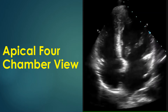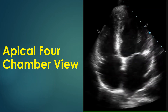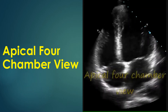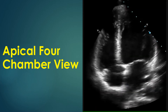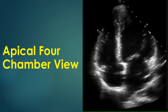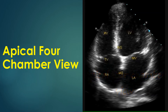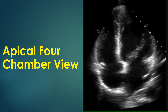The apical four-chamber view is obtained from the apex of the heart. It gives a good image of all four cardiac chambers as well as the mitral and tricuspid valves. The inter-atrial and interventricular septum are seen in this view. The tricuspid valve is attached more distally to the septum than the mitral valve, and the region in between is called the atrioventricular septum, which separates the left ventricle from the right atrium.